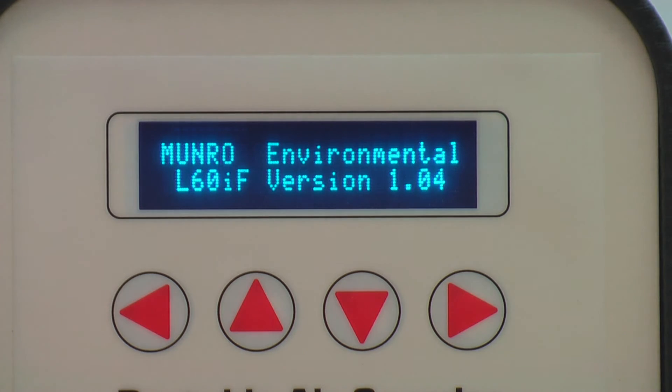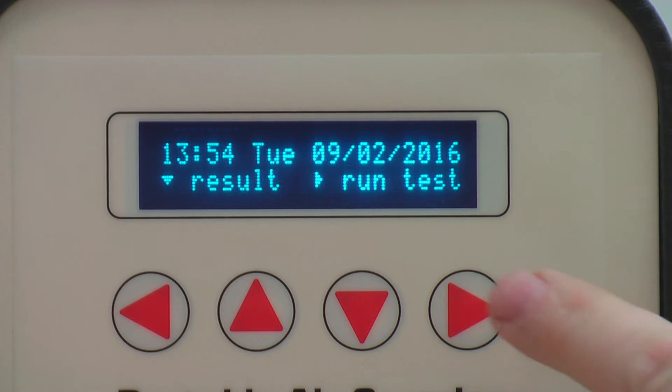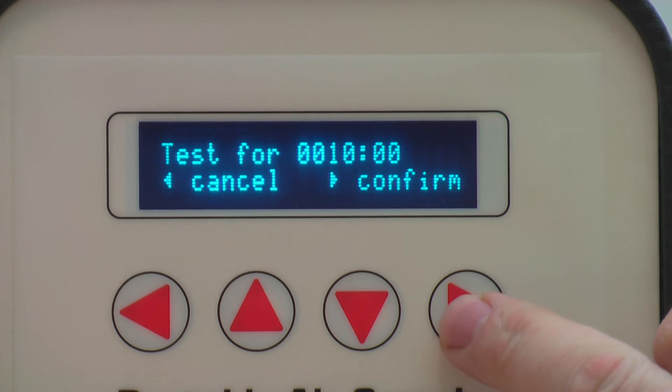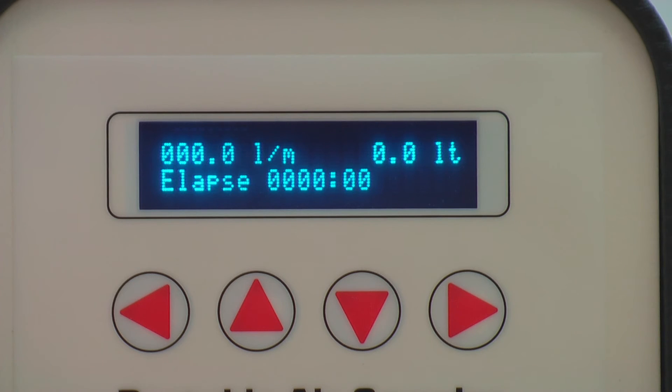For this example test, we have selected liters as our unit, which was set as auto in the configuration menu. The LCD shows the elapsed time, the current flow rate, and the overall volume sampled. Stop the test at any time by pressing one of the arrows or by turning off the air sampler.